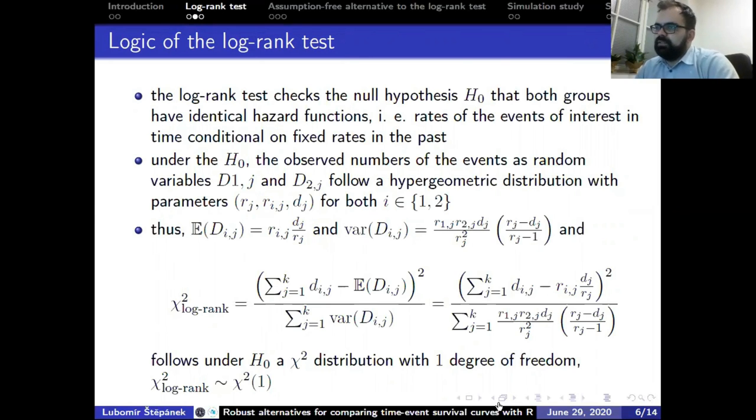It means that rates of events of interest in time are shown on fixed rates in the past. Under the null hypothesis, we observe numbers of events of interest as random variables from hypergeometric distribution for both groups. Thus, we can derive formulas for their expected value and variance, and for the chi-squared statistics, which follows under the null hypothesis a chi-squared distribution with one degree of freedom.